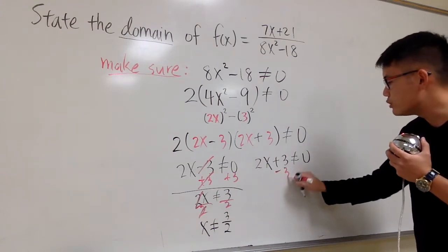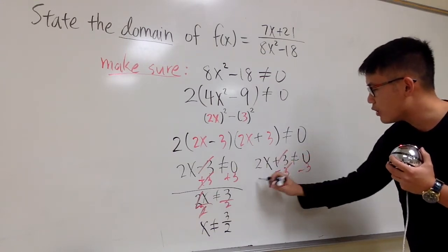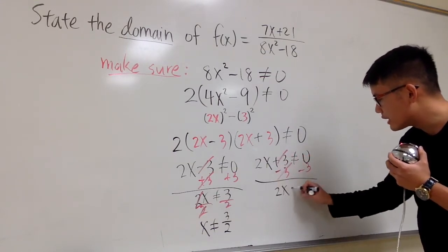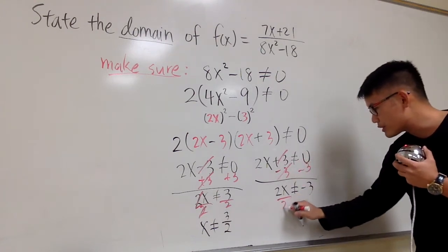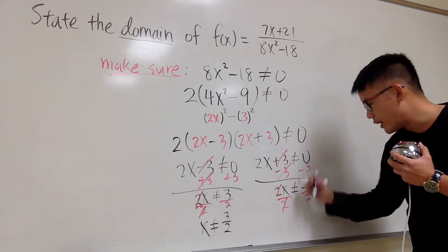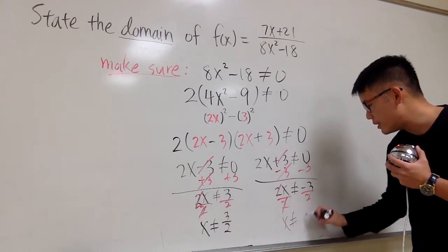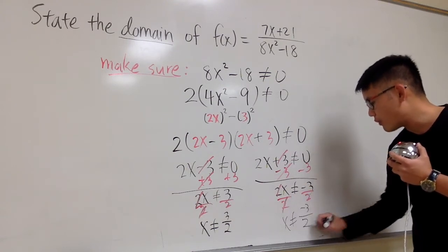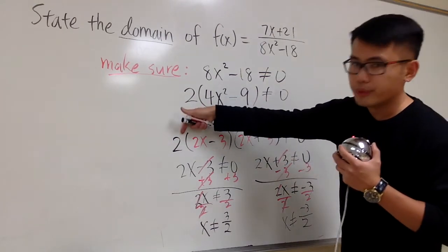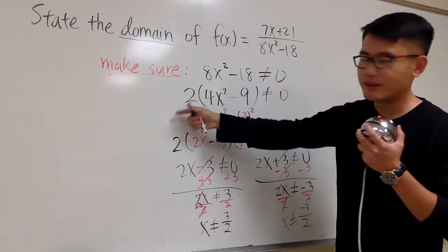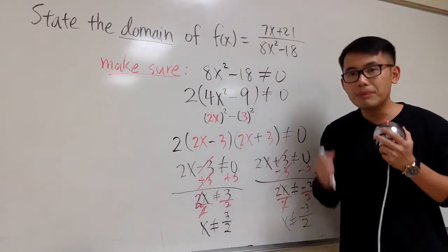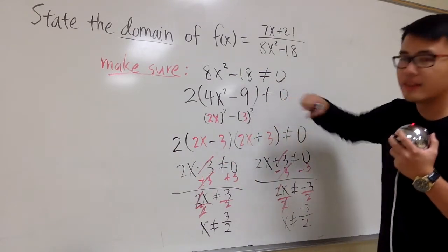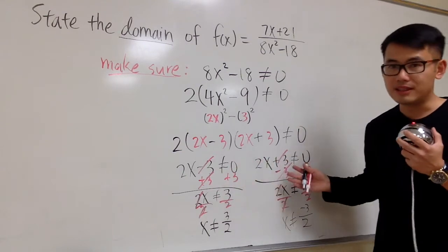On the other hand, we subtract 3 on both sides, so that they cancel, and then we see the 2x cannot be negative 3. And similar to that, we divide both sides by 2. And right here, we are saying, x cannot be -3 over 2. This 2, all the way in the front, doesn't matter. In fact, you can divide both sides by 2, so you can get rid of that. Only pay attention to the factors that they have the x in there.